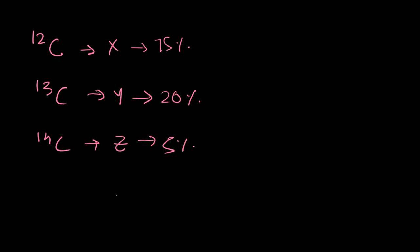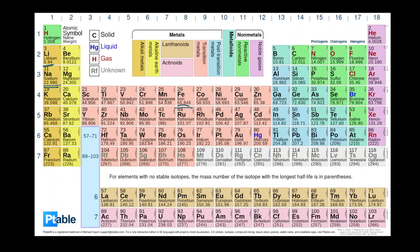The average atomic mass will be the weighted average of all the isotopes, which will be equal to 75% of x plus 20% of y plus 5% of z. And this will result in the average atomic mass, and that is why the atomic mass is listed in fractions or decimal numbers.